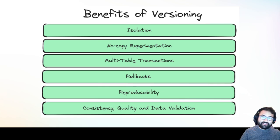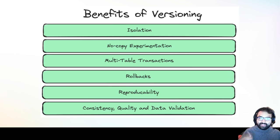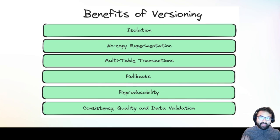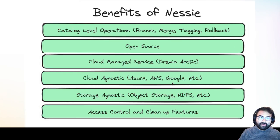Multi-table transactions on that branch — you can do transactions across multiple tables, across multiple tools, across multiple users, and none of that is visible to the main production branch until you merge. So all those transactions across all those tools and users become visible and published at the same time for maximum data consistency. Data recovery — because we track commits, if there's a problem you can easily recover not just a single table but every table, by just rolling back the entire catalog, so all your tables are back to where they were before the disaster. Reproducibility — you can tag particular commits, so if you want to tag the data as it is at the end of each month, you can create named tags to reproduce a particular state of the entire catalog, not just a single table. Consistency and quality data validation — because you can isolate data, you can do all those data quality checks in an isolated way and then publish the data once you know those checks have passed.